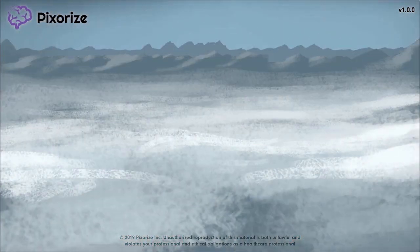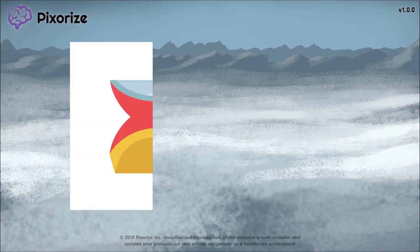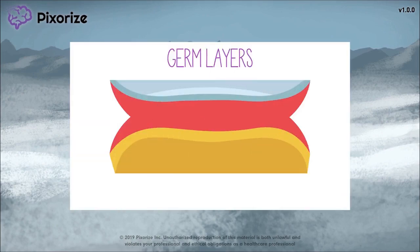Let's quickly review what a germ layer even is. A germ layer refers to one of the primary layers of cells that form early on in embryonic development. Human embryos have three germ layers: the ectoderm, the mesoderm, and the endoderm. The mesoderm is the germ layer that lies between the ectoderm and the endoderm. The prefix meso literally means middle, so it should be easy to remember that the mesoderm is the middle germ layer.